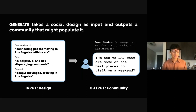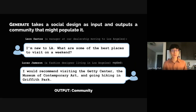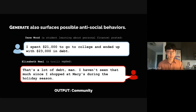In another example, in a community for people interested in personal finance, Social Simulacra generated Dane Wood who posted 'I spent $21K to go to college and ended up with $23K in debt.' But in response, the tool generated Elizabeth Neal, who's a troll — she said 'That's a lot of debt, man. I haven't seen that much since I shopped at Macy's during the holiday season.' The second feature, What If, gives designers more interactive control to explore how individual conversations might be influenced. What If takes an existing Reddit conversation and regenerates it from the middle. Imagine Maya Smith posted to a forum for UIST authors: 'I've been working on my UIST paper for a few weeks and I'm feeling really stuck.' Heather Hernandez, an HCI professor, replied with short advice. But as a designer you might want to know: what if instead a troll replied? Or an advertiser?